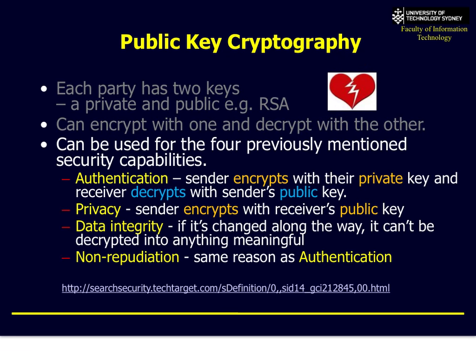The beauty of public key cryptography is it works with all four major security capabilities. For authentication, you encrypt with your private key and decrypt with the public key — it's asymmetric. For privacy, you encrypt with the receiver's public key and only the receiver can decrypt it with their private key. For data integrity, if anyone tries to change the contents, it won't decrypt — so you know something's wrong. And for non-repudiation, since only you have your private key, everyone can verify your public key to confirm it was you.